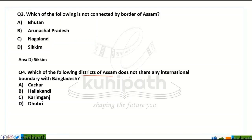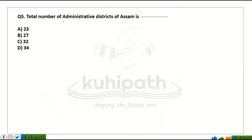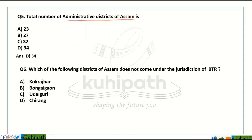Which of the following districts of Assam does not share any international boundary with Bangladesh? What is the number of administrative districts of Assam? Which of the following districts does not come under the jurisdiction of BTR (Bodoland Territorial Region) — options include Baksa, Kokrajhar, Udalguri, Chirang, and others?